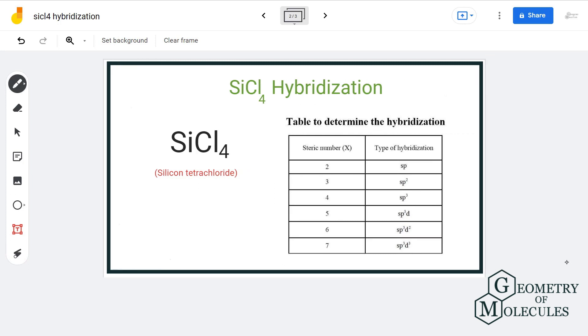Let us add the two. We have four sigma bonds plus zero lone pairs of electrons. That gives us a steric number of four. Now, that corresponds to sp3 hybridization. So, the hybridization of SiCl4 is sp3.